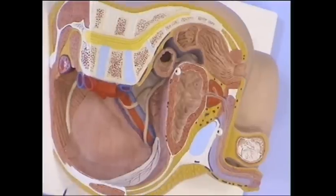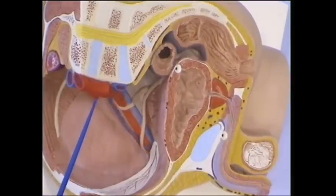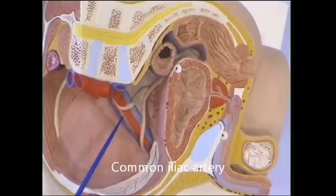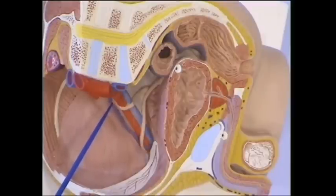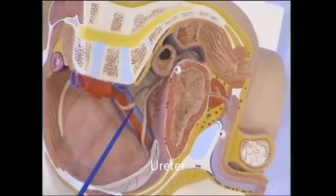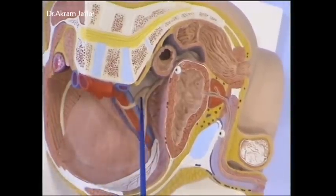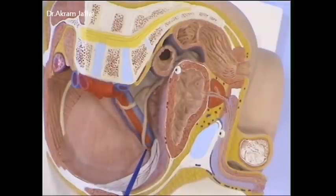If we look at the specimen from above, you can see this is the aorta, and here is the inferior vena cava. The aorta bifurcates at the level of L4 into two common iliac arteries. This is the external iliac artery, accompanied by the external iliac vein. At the site of bifurcation of the common iliac artery, the vessels are crossed by the ureter. The ureter comes from the abdomen down, crossing the site of bifurcation of the common iliac vessels to enter into the pelvis.